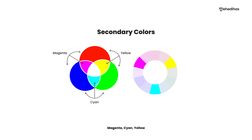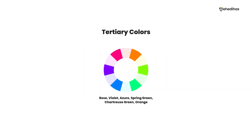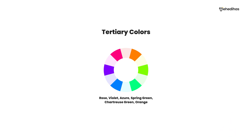When we mix primary colors, we get secondary colors — magenta, cyan, and yellow. Tertiary colors are the mix of primary and secondary colors, giving us 6 more colors. We can see tertiary colors like rose, violet, azure, spring green, and orange.